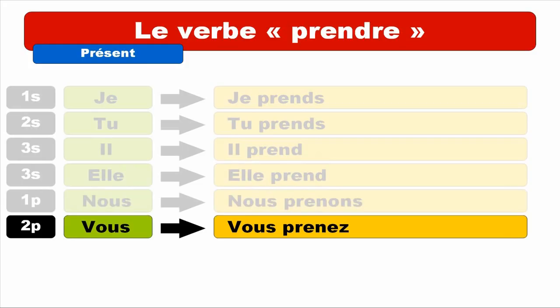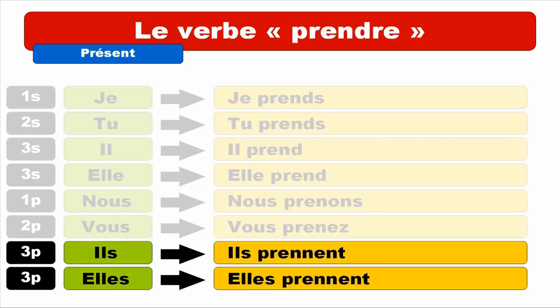For NOUS and VOUS we've got classical endings — for NOUS it's O-N-S, for VOUS it's E-Z. And then finally ILS and ELLES have the plural form. ILS PRENNENT. Repeat. ILS PRENNENT. You can notice that the first E of PRENNENT is pronounced like E, because you've got a double N after it — that changes the pronunciation. So ILS PRENNENT. Repeat. ILS PRENNENT.